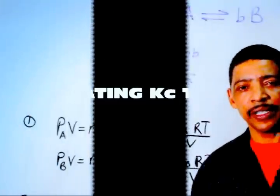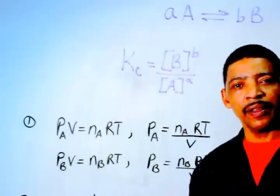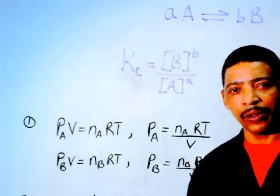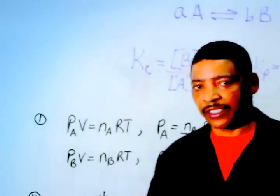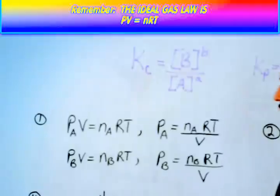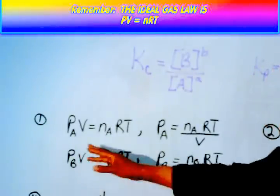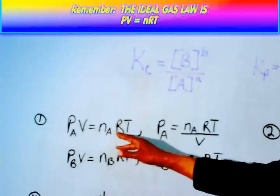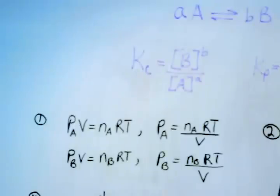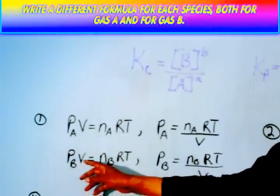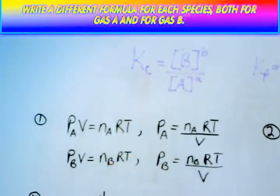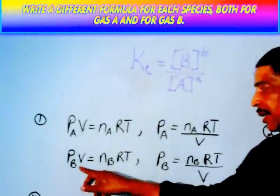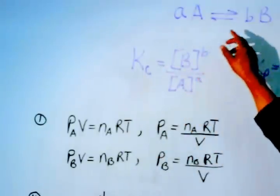The question is, how is the value of Kc related to the value of Kp? The best way to explain the relationship between Kp and Kc is to use the ideal gas law. In the first case, P_A × V equals n_A × R × T. In the second case, P_B × V equals n_B × R × T, where A represents the reactants and B represents the product.